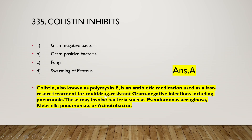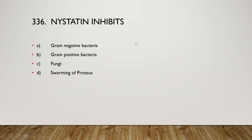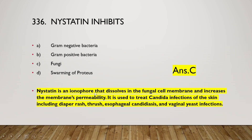Colistin, also known as polymyxin E, is an antibiotic used as a last-resort treatment for multi-drug-resistant gram-negative infections including pneumonia. This may involve bacteria such as Pseudomonas aeruginosa, Klebsiella pneumoniae, or Acinetobacter. Nystatin inhibits gram-negative bacteria, gram-positive bacteria, fungi, or swarming of Proteus? The right answer is option C — fungi. Nystatin is an ionophore that dissolves in the fungal cell membrane and increases membrane permeability, used to treat Candida infections.